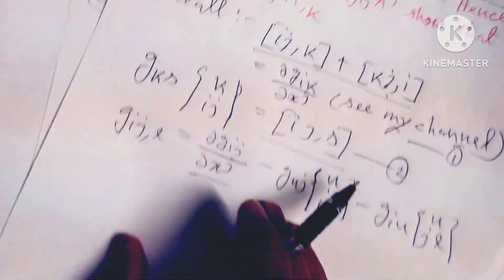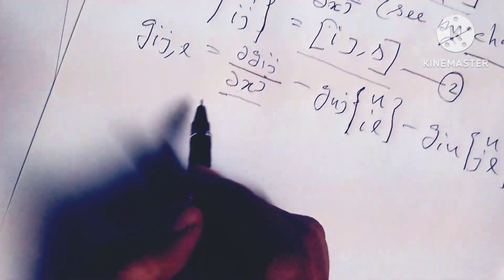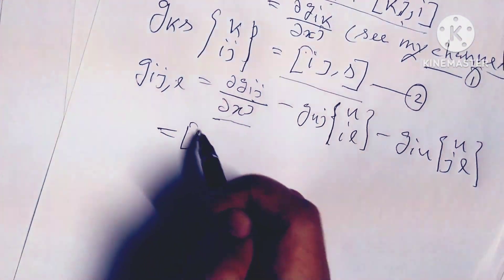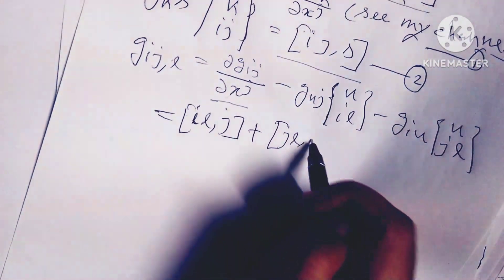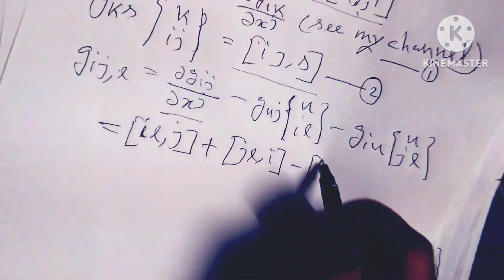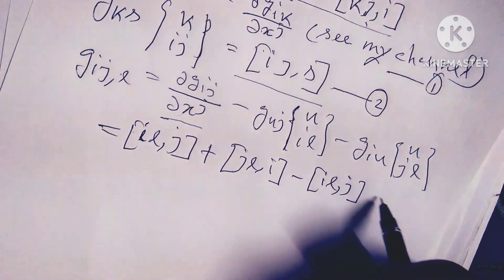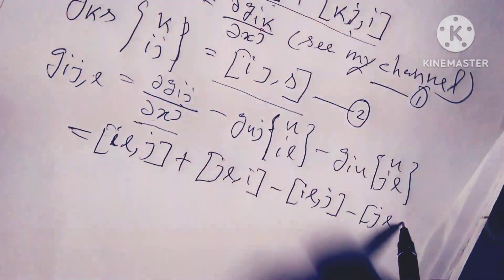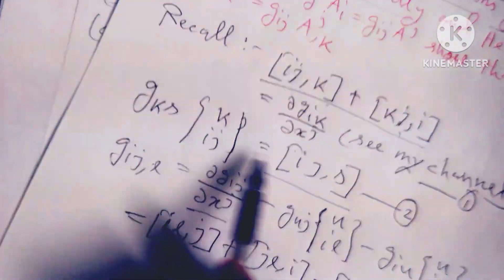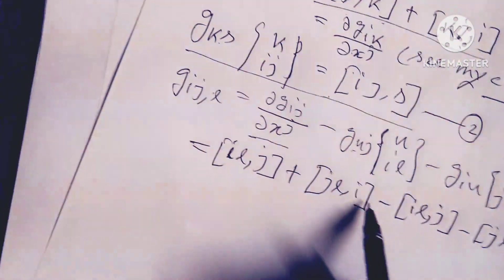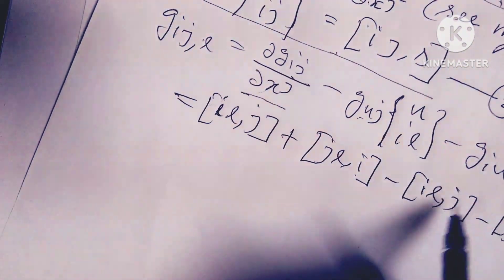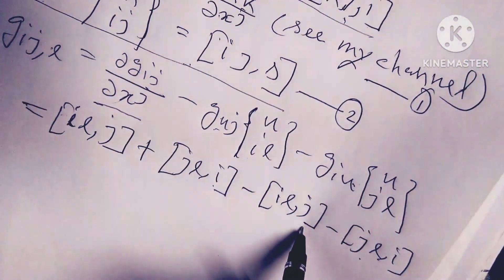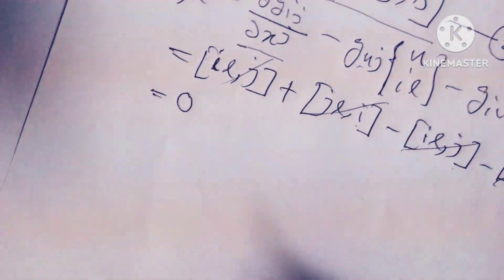From equations 1 and 2, we can substitute del g_ij / del x^l as [il, j] + [jl, i]. Then we expand and get terms: [il, j] + [jl, i] minus [il, j] minus [jl, i], and all terms cancel. So g_{ij,l} equals zero.